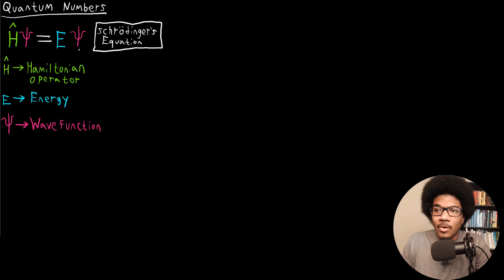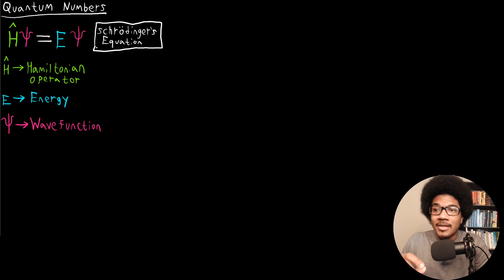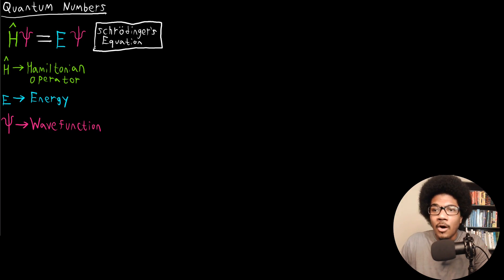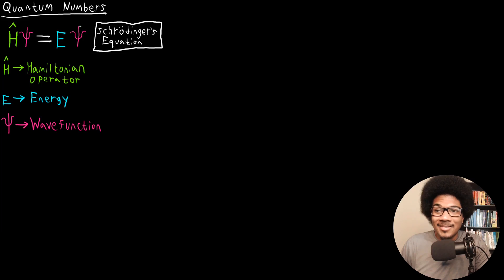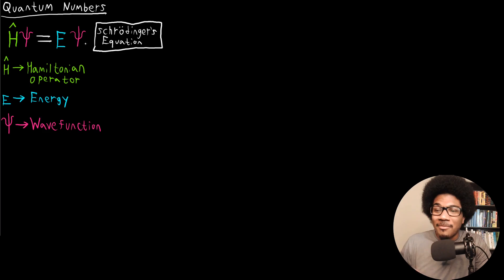Schrödinger's equation requires a lot of high-level mathematics — linear algebra and calculus — to really work through. But its solutions are going to be very useful regardless of the stage of chemistry you're at, whether it's general chemistry or advanced coursework. If you take physical chemistry, you'll spend an entire semester solving this equation, but at this level we want to understand it on a basic level and understand what its solutions are telling us.